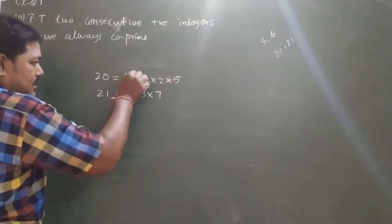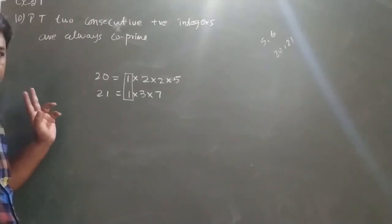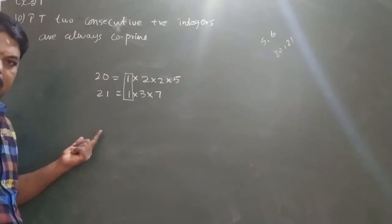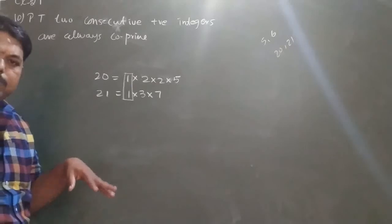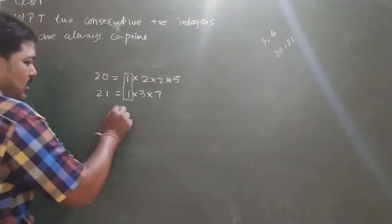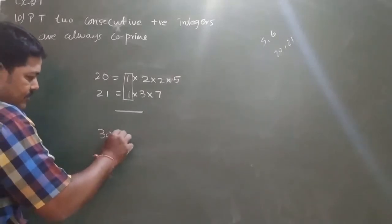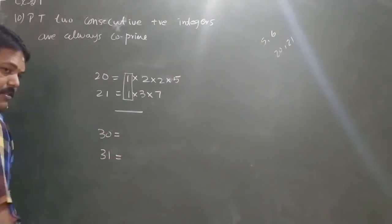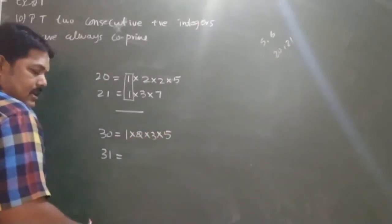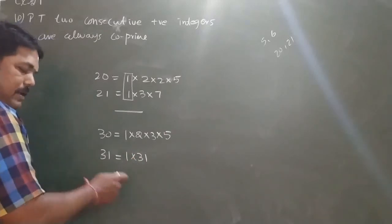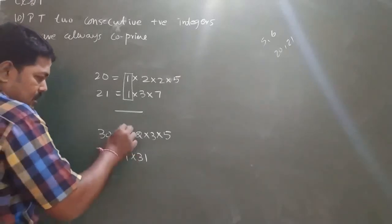No one has no idea. Let's say a co-prime. Let's say a number: 30, 31. 31 is a prime number.